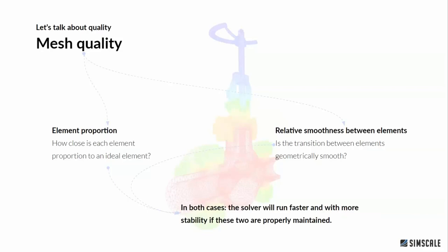There are two main things when assessing mesh quality. The first is how close each element is, in terms of its proportions, to an ideal element. If an element is very squeezed, it's not going to have good proportions and the mesh quality will be worsened.